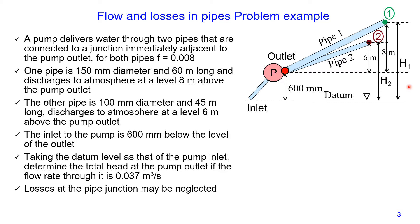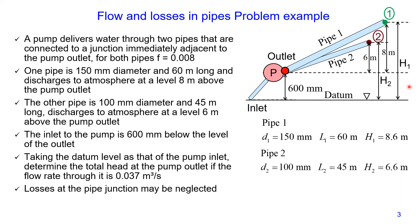The total head is equal to the elevation from the datum up to the point where discharge occurs, because it's atmospheric pressure and so gauge pressure for both points is equal to zero. Also, because the water is discharging into the atmosphere, the velocity where discharge occurs is also zero. So our data for pipe number one is: 150 mm diameter, 60 m long, and it's 8.6 m above the datum — because we have 8 m plus 0.6 m. For pipe number two: 100 mm diameter, 45 m long, and 6.6 m above the datum. The friction factor for both pipes is 0.008.